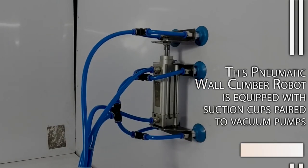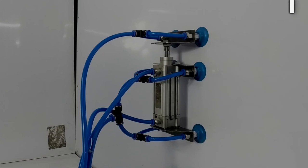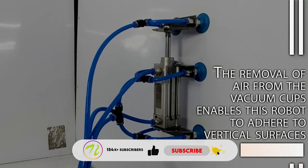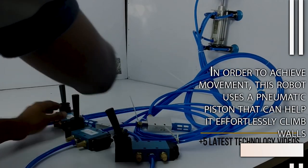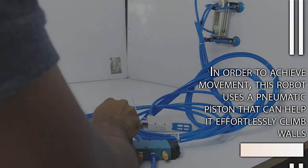This pneumatic wall climber robot is equipped with suction cups paired to vacuum pumps. The removal of air from the vacuum cups enables this robot to adhere to vertical surfaces. In order to achieve movement, this robot uses a pneumatic piston that can help in effortlessly climbing walls.